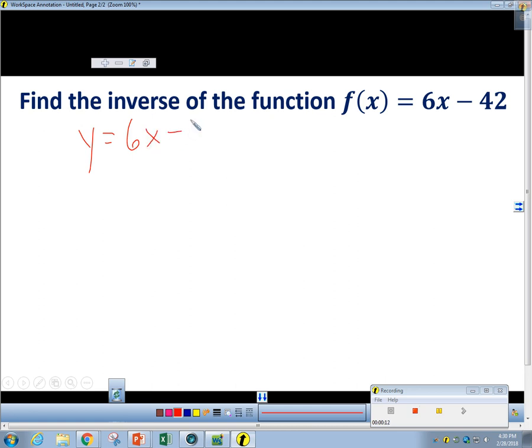And then, the thing that makes the inverse happen is when you switch the x and the y. So those just change places. So it's going to be x equals 6y minus 42.